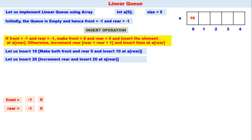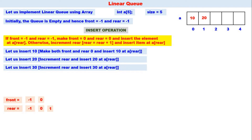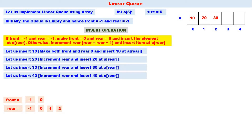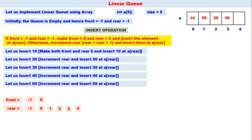Let us insert 20: increment rear, rear becomes one, insert 20 at a[1]. Insert 30: increment rear, rear becomes two, insert 30 at a[2]. Insert 40: increment rear, rear becomes three, insert 40 at a[3]. Insert 50: increment rear, rear becomes four, insert 50 at a[4]. The queue is now full since rear equals size minus one — rear is four and size is five.